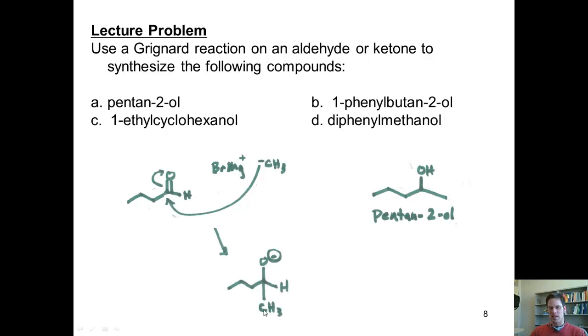You will notice that if I count the carbons in this chain, it numbers to five. One, two, three, four, five, which is the very product that I need. All I need to do is just protonate this O-. How do I do that? By quenching it with acid. That is the answer to the first problem. Let's take a look at the answer to the next problem, which asks us to synthesize 1-phenylbutan-2-ol.